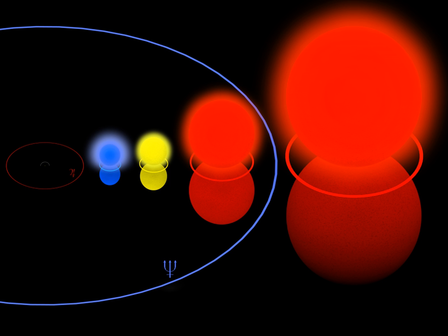Hypergiants are difficult to study due to their rarity. Many hypergiants have highly variable spectra, but they are grouped here into broad spectral classes. Some luminous blue variables are classified as hypergiants during at least part of their cycle of variation.